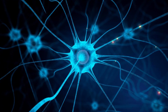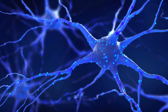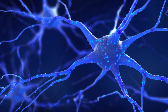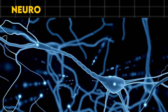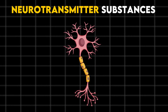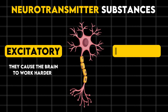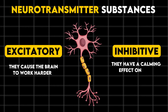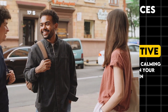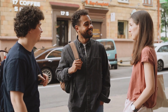By sending chemicals from one neuron or nerve to the next, the brain communicates with itself. These neurotransmitter substances can be divided into two groups: excitatory, causing the brain to work harder, and inhibitive, which means they have a calming effect. Your daily mood and functioning are significantly influenced by this constant, rapid-fire messaging.